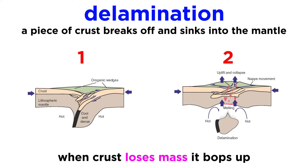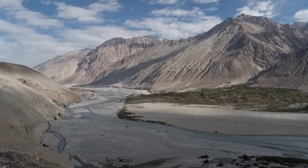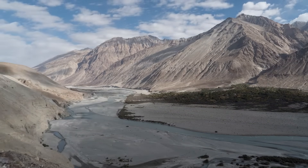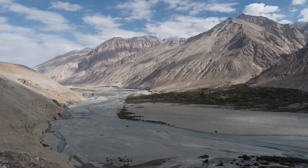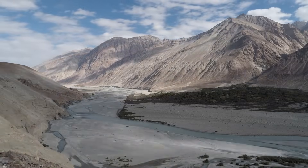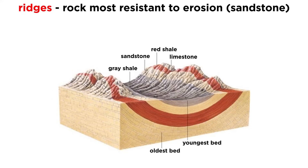Remember, whenever the crust loses mass, it bobs up. In this way they are unlike the younger Rockies and Himalayas whose towering peaks were thrust upward by the force of two colliding plates. In the modern Appalachians, the rocks that are most resistant to erosion, like sandstone, form the ridges, while the weakest and most soluble rocks like limestone and shale form the valleys.